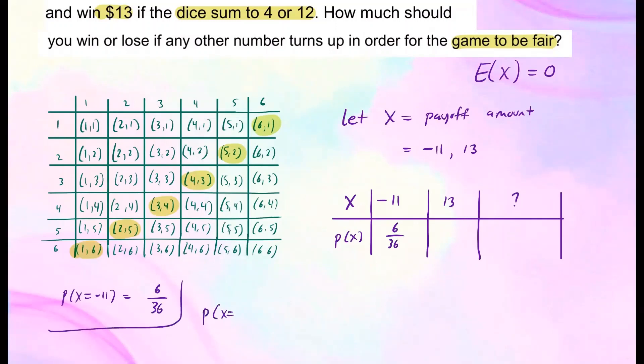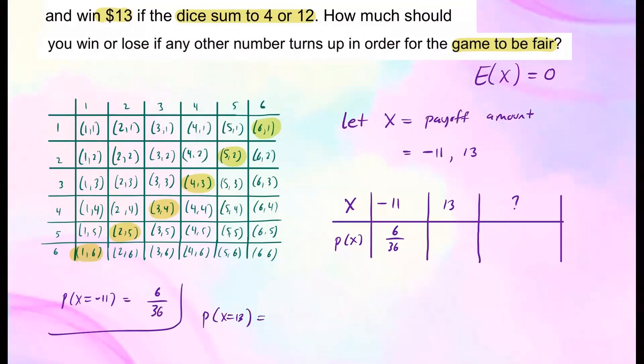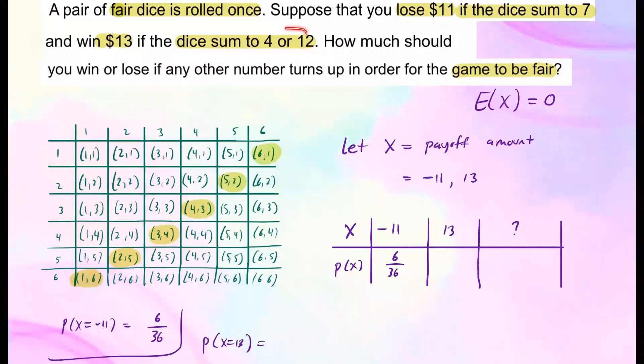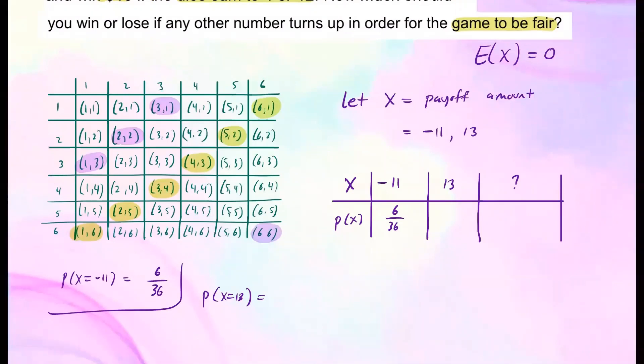Similarly, probability that you're going to win $13, x is 13. Well, we win $13 if the dice sum to four or 12. So four would be right here, right here, and right here. So they sum to four, and 12 is only this outcome. So there's four outcomes for that event. So the probability of winning $13 is four out of 36.